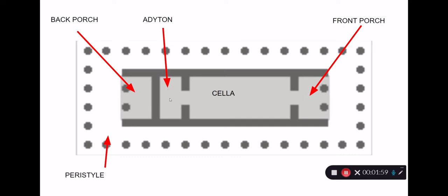There may be an extra room at the back called the adaton — in Greek, 'the hidden room.' It can have various uses: it could be a treasury where you keep valuable old votives, or it could be used for ritual purposes where certain rites are performed. Then there is often a back porch, again held up by two columns, but the back porch does not connect into the cella — it's always walled off.